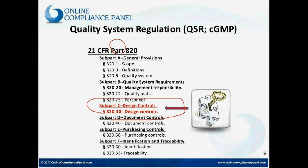Regarding quality system regulation, just to mention that in the United States government there are three branches: executive, judicial, and legislative. U.S. Congress makes laws. The U.S. president is the head of the executive branch, which implements laws and makes regulations based on those laws. There are 15 executive departments, one of them being DHHS — the Department of Health and Human Services — where FDA belongs to.